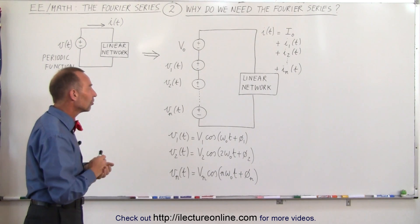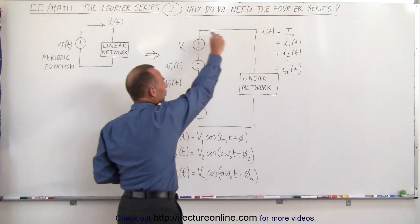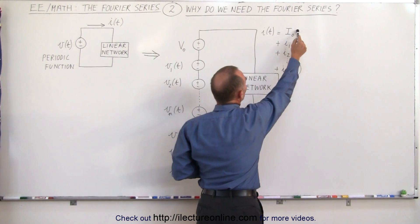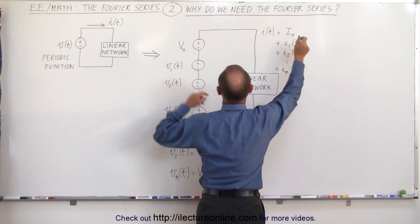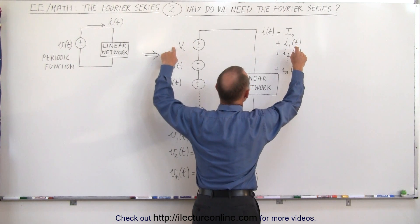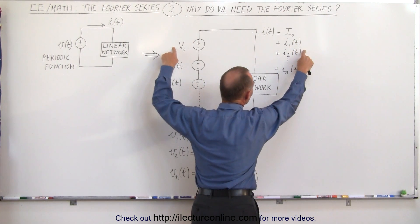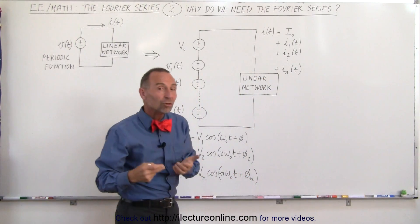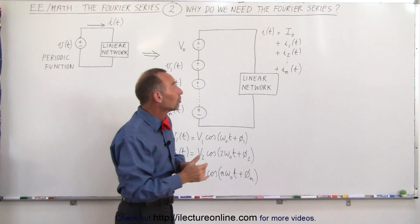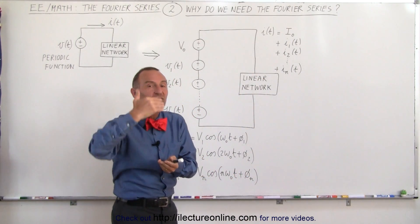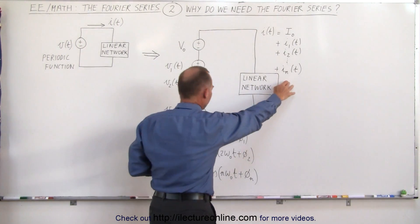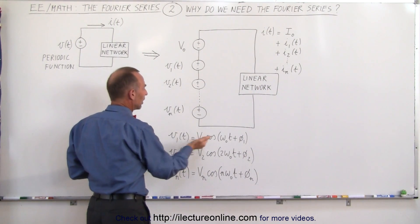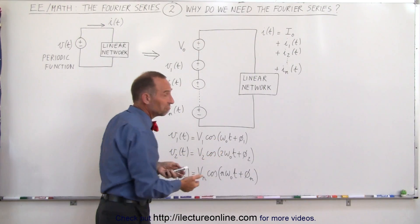We will then drive the circuit with those, which will result in the summation of currents — the current corresponding to the DC voltage input, and then I sub 1, I sub 2, I sub 3, all the way to I sub n. With the superposition principle, all we have to do is simply sum these currents together.